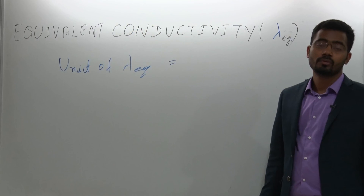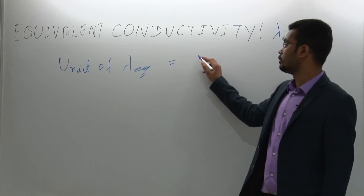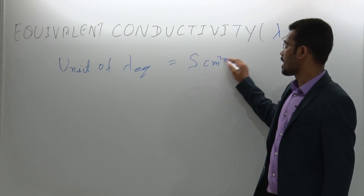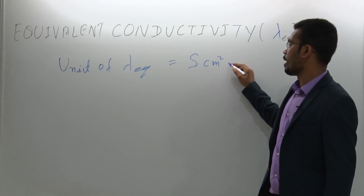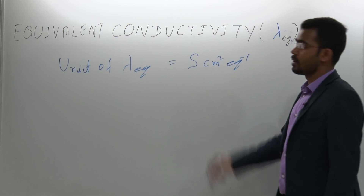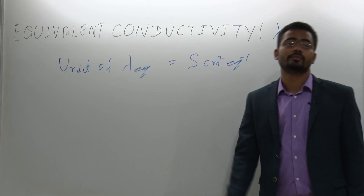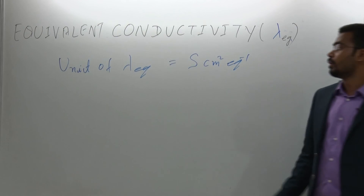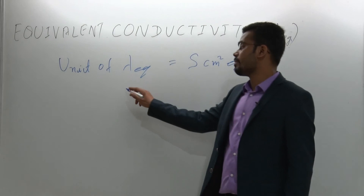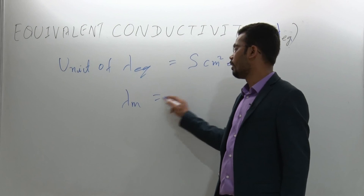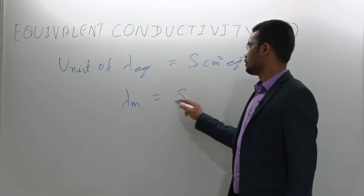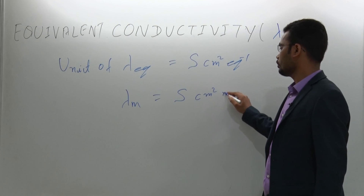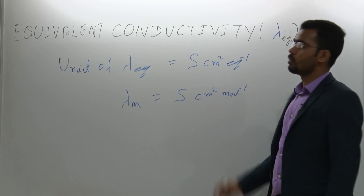The unit of lambda equivalent is siemens centimeter square per equivalent, and the unit of lambda molar is siemens centimeter square per mole.